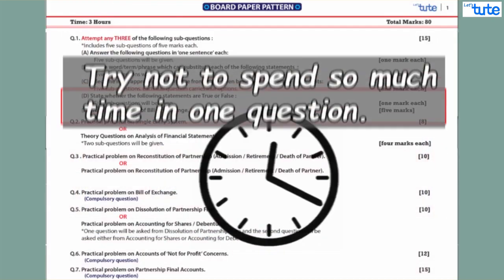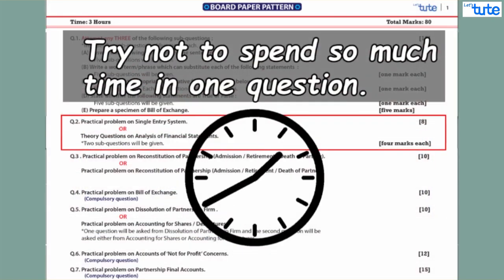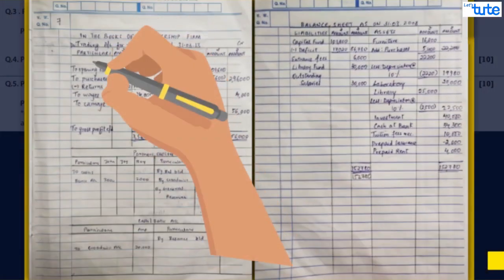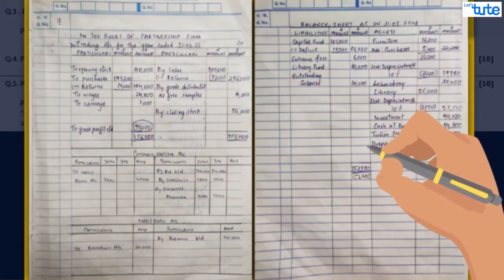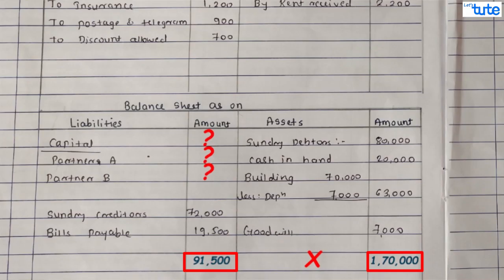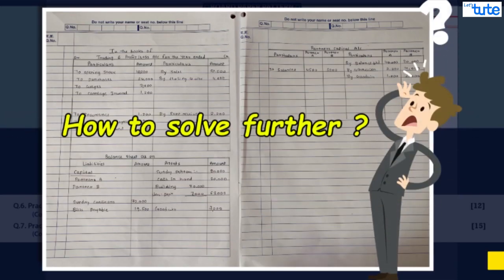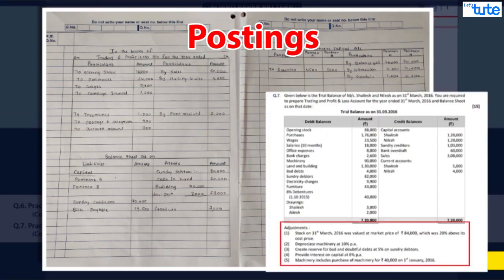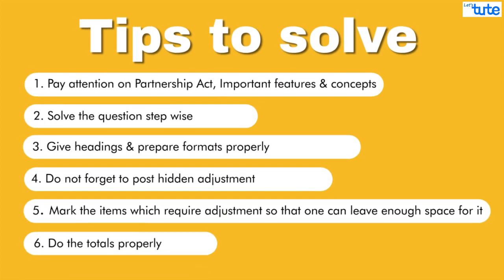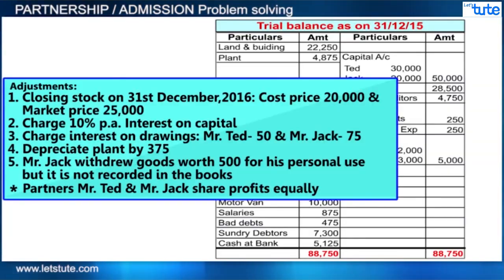In an exam, please don't waste too much time on only one question, as that leaves you with incomplete work due to lack of time for other questions. At last, if time permits, go back and complete the partnership final account question. Even if you are not able to tally the balance sheet, don't panic — you still get marks for the posting.